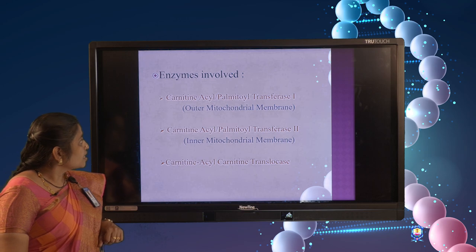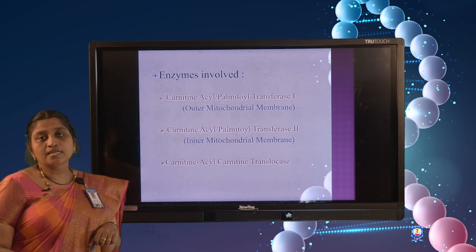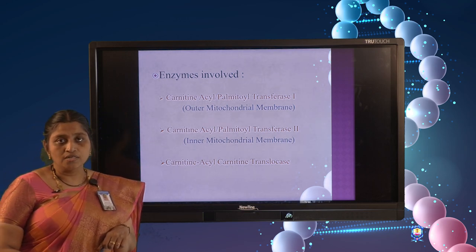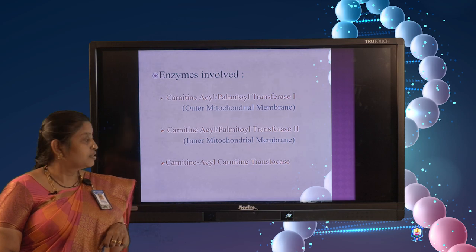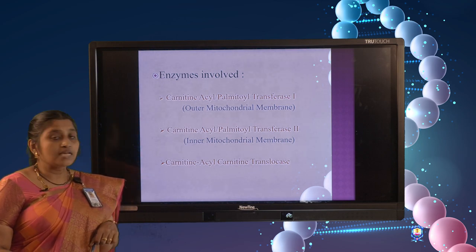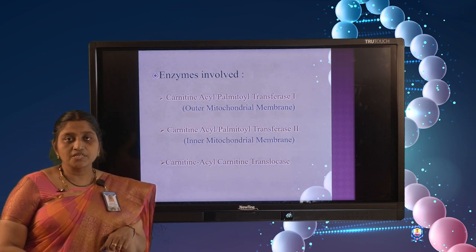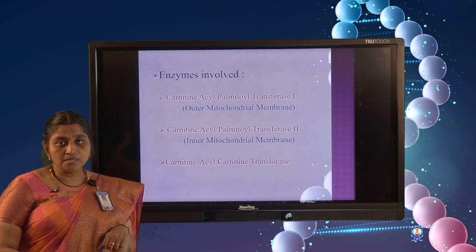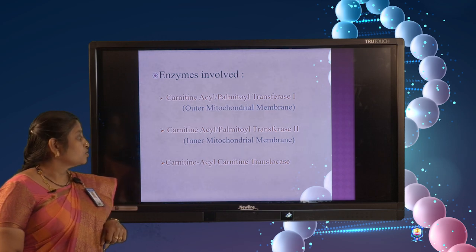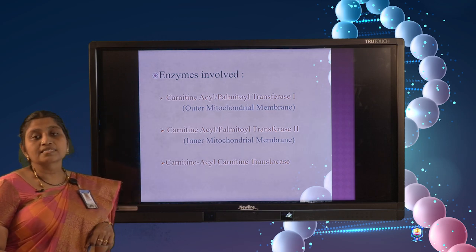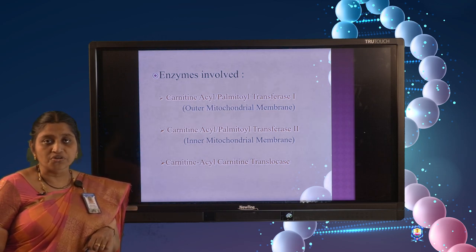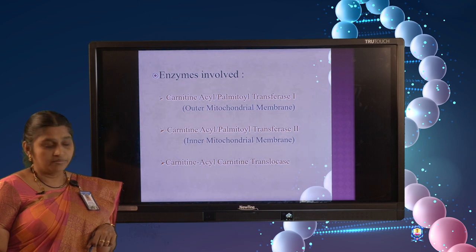The carnitine shuttle mechanism involves three enzymes which help in the transportation process. These are carnitine acyl transferase 1 (CPT1), located in the outer mitochondrial membrane; carnitine acyl transferase 2 (CPT2), located in the inner mitochondrial membrane; and carnitine acyl carnitine translocase, also located in the inner mitochondrial membrane.